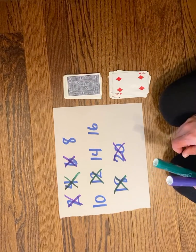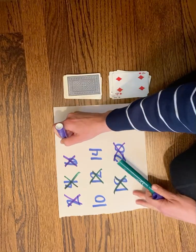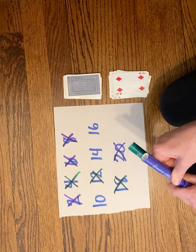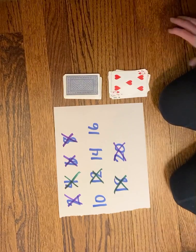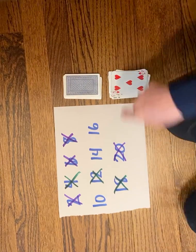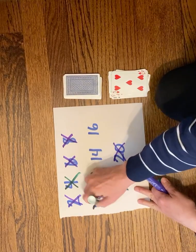Purple has four times two, that's eight, so purple gets to take eight. Green gets five times two, which is ten, so green will take the ten.